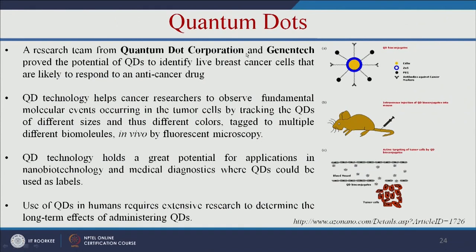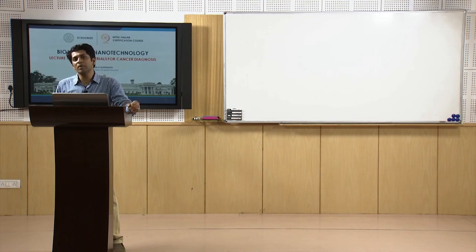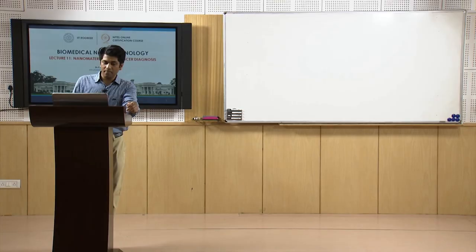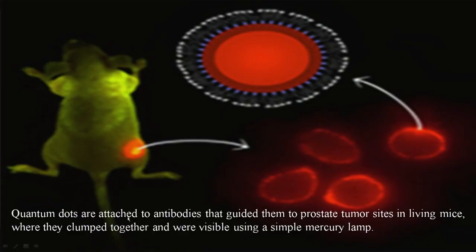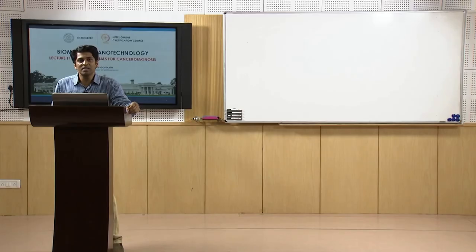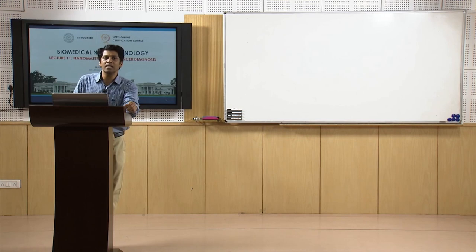A research team from Quantum Dot Corporation made quantum dots to identify live breast cancer cells. This technology is available for mouse models and can be used for various cell biology applications. However, use of the same quantum dots in humans requires extensive research to determine long-term effects, since quantum dots are made up of heavy metals. In another example, quantum dots attached to antibodies were injected to specifically bind to prostate tumour sites in living mice, becoming visible under a simple mercury lamp.